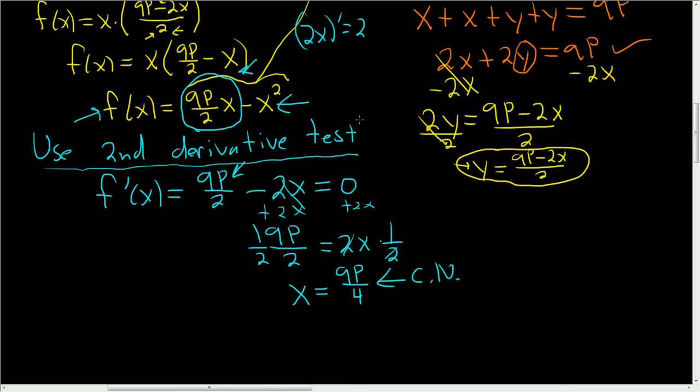So remember, we're using the second derivative test to try to find the maximum of our function here. The first step in using the second derivative test is to find the critical numbers. So that part is done. The second step is to take the second derivative. The derivative of 9p over 2, it's a constant, so the derivative is 0. And the derivative of negative 2x is just negative 2. So we found the critical number and took the second derivative.